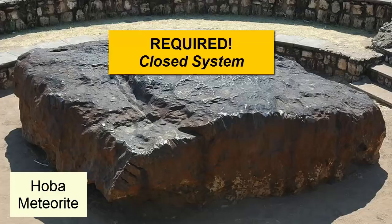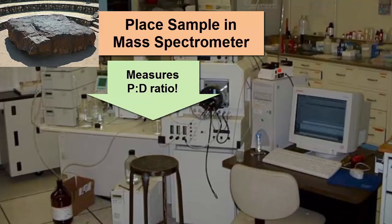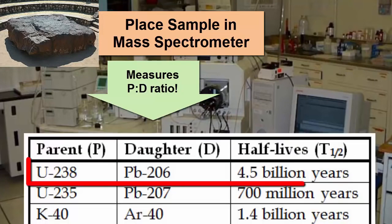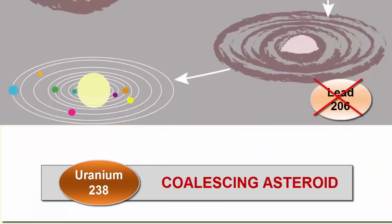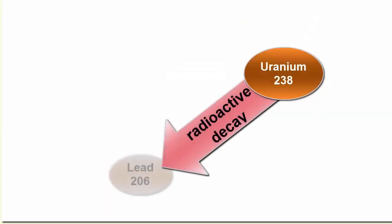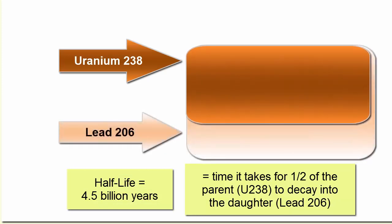So how do we date a meteorite? First, we ensure it was a closed system by picking a good sample without any weathering or evidence of melting. Then we place a sample of it in a mass spectrometer to measure the ratio of the particular radioactive decay pair we're studying — in this case, uranium-238 and lead-206. When asteroids first coalesce, they contain plenty of uranium-238 but no lead-206. The only way to produce lead-206 is as a radioactive decay daughter product of uranium-238. Every 4.5 billion years, one half of uranium-238 will decay into lead-206.